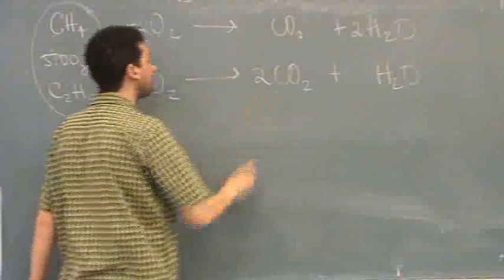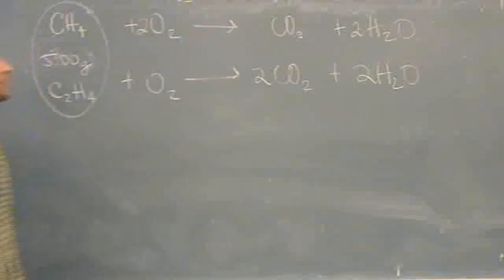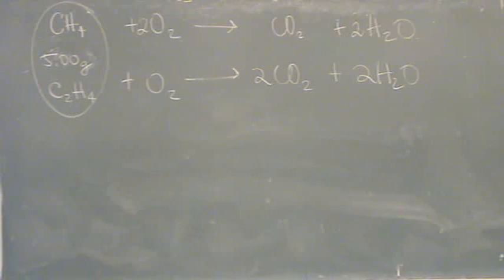Two carbons here, so I'll put a two here. Four hydrogens, so I'll put a two there. I'll have four hydrogens on both sides. Now on the right-hand side, there's one, two, six, so I'll put a three. Okay, now I have both of my reactions balanced.